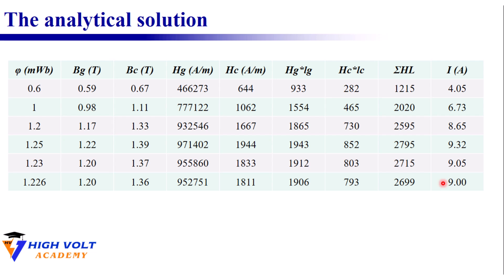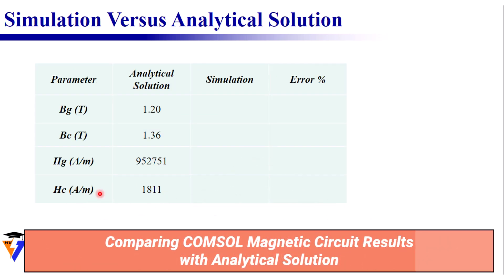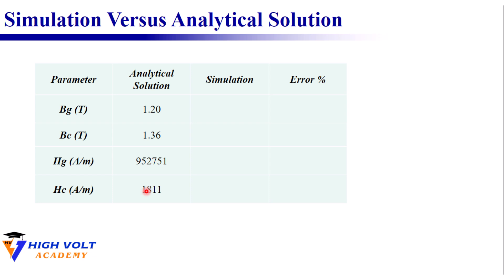Finally 1.226 milliweber gave 9 ampere. Perfect. That's our final analytical solution. From it the magnetic flux density in the air gap equals 1.2 tesla. Now let's see how this analytical result compares with the COMSOL simulation.